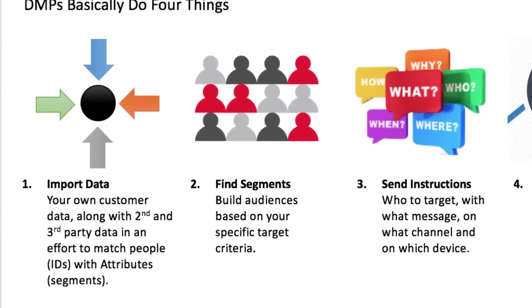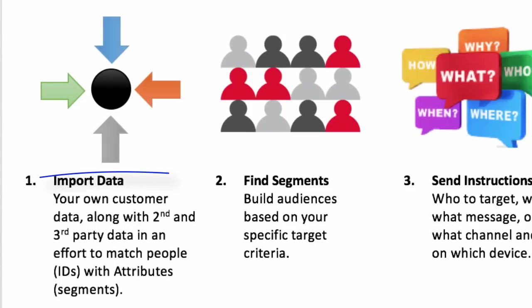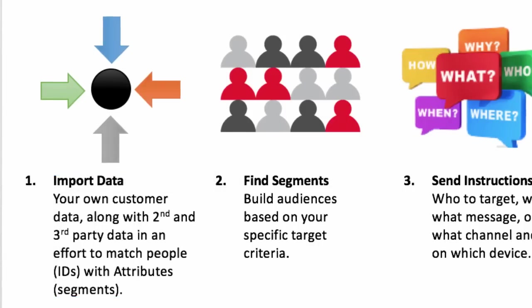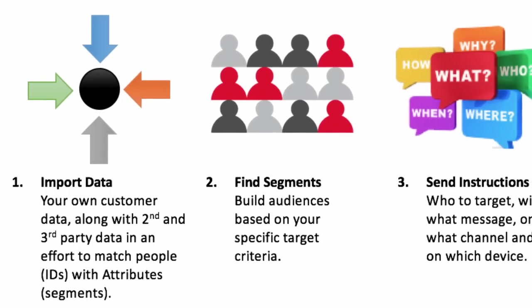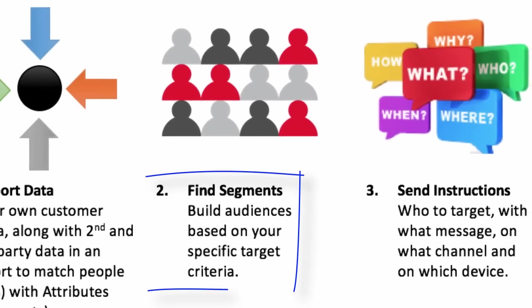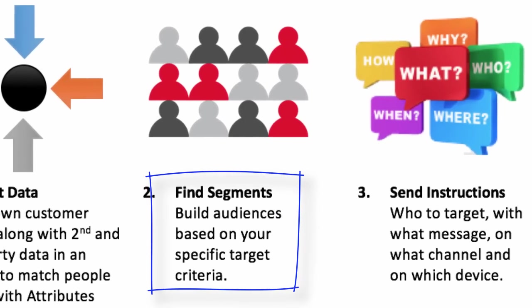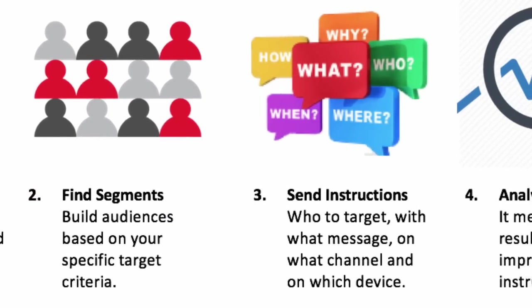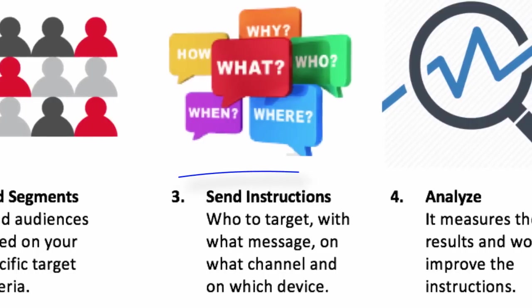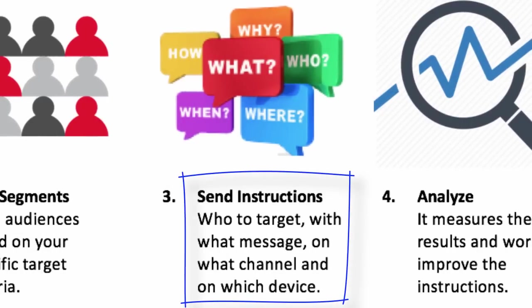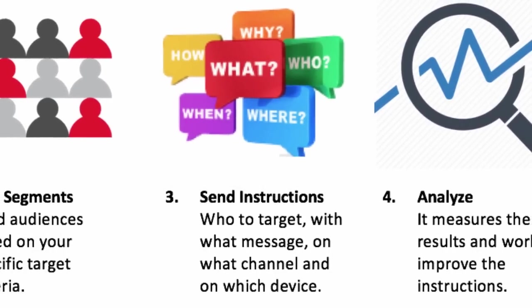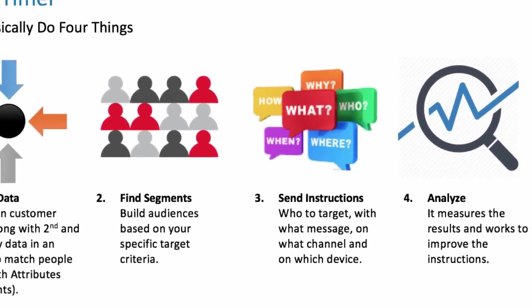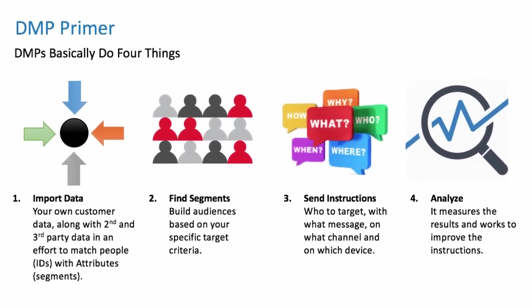Basically, a DMP does four things: it imports data — obviously customer data that you own, and third-party data in an effort to do some identity matching. From there, it finds segments based on your criteria. After that, it sends instructions on who to target on what channel with what message. And finally, it measures the results and works to improve the instructions.